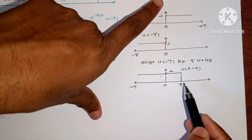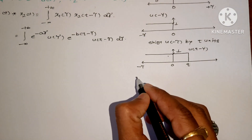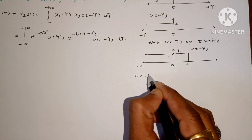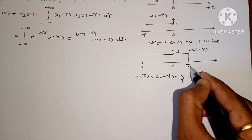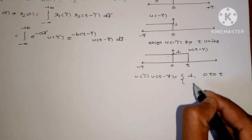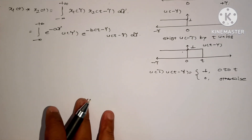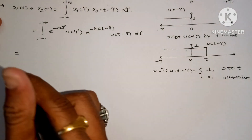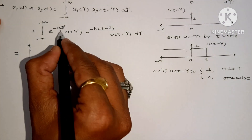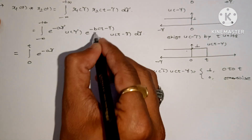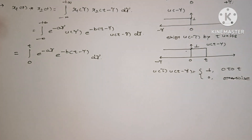For all negative values of τ the amplitude is 0, and from t onwards the amplitude is also 0. So u(τ) multiplied by u(t minus τ) gives amplitude 1 between 0 and t, and 0 otherwise. Therefore, the integration limits change from 0 to t, giving us the integral of e raised to minus aτ times e raised to minus b(t minus τ) dτ.